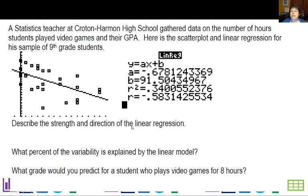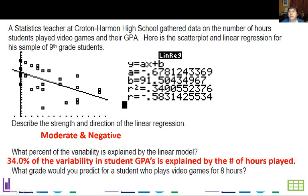So the strength and direction of the linear regression, we have to look at r. And that would be negative .58. That would be negative for sure. And it's between negative .5 and negative .8, so we'll call it moderate. What percent of the variability is explained by the model? We look at r squared. And so in this case, I move the decimal over two places, 34% of the variability in GPA is explained by the number of hours played. So what grade would we predict for a student who plays video games for eight hours? Well, I just substitute in eight and I get 86.08.